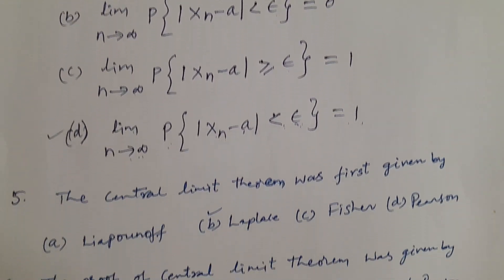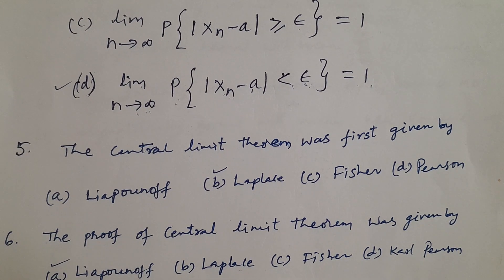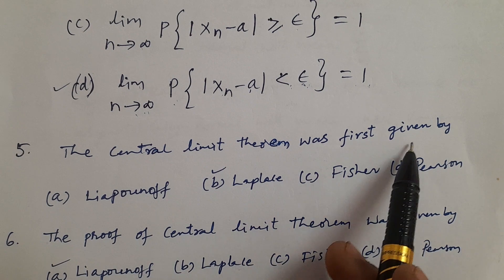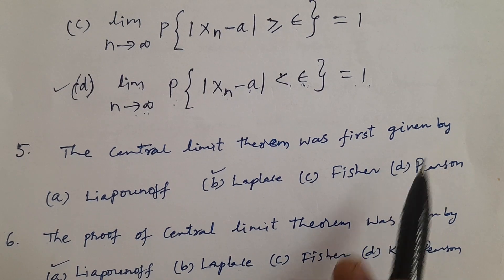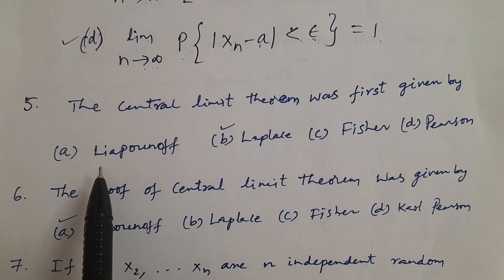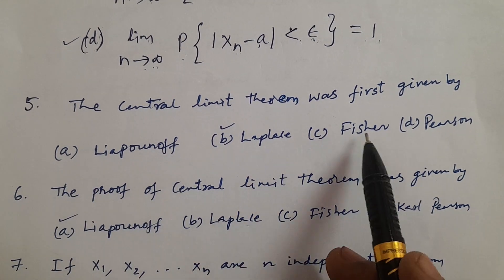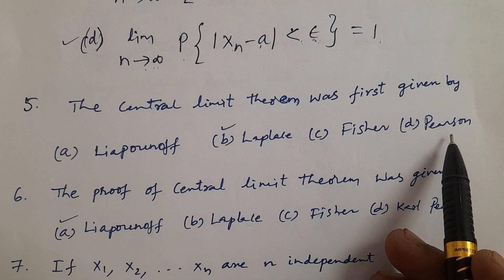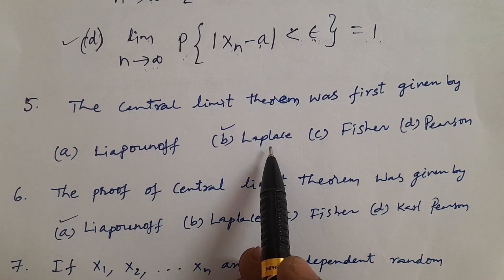Now question number 5. The central limit theorem was first given by: A. Liapunov, B. Laplace, C. Fisher, D. Pearson. The answer is B — Laplace.